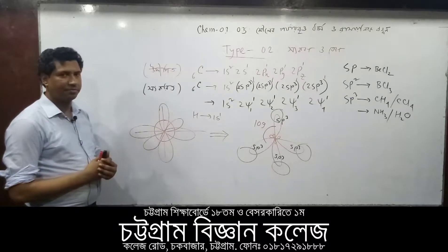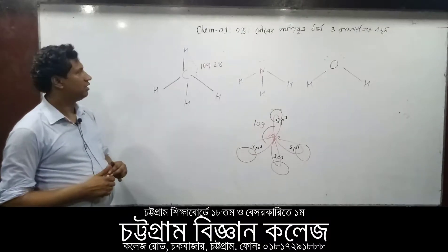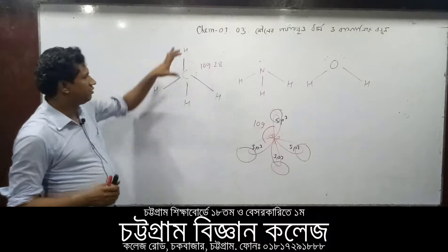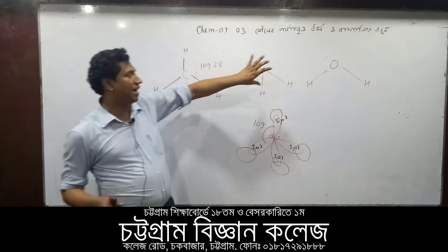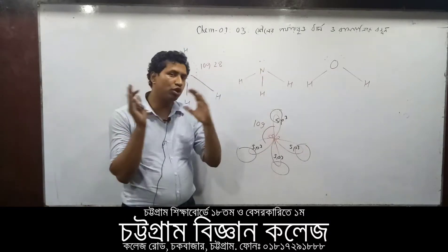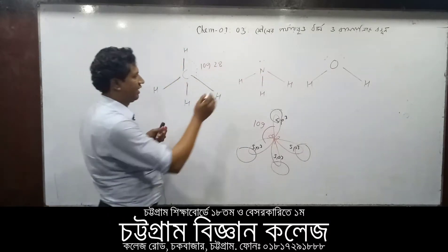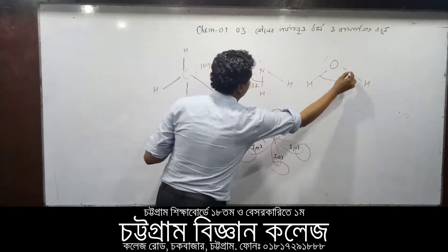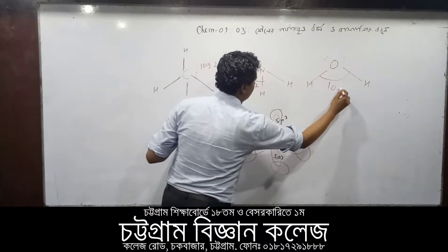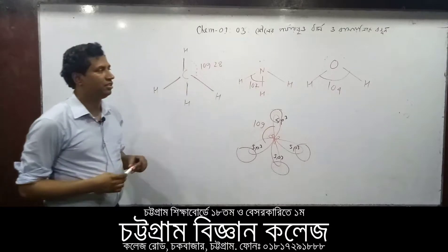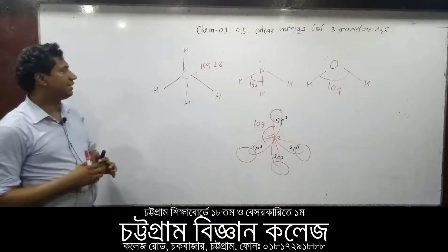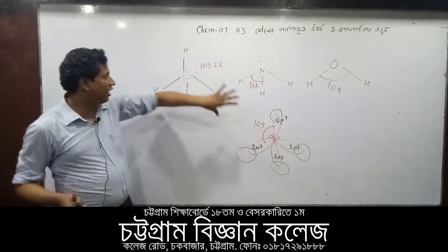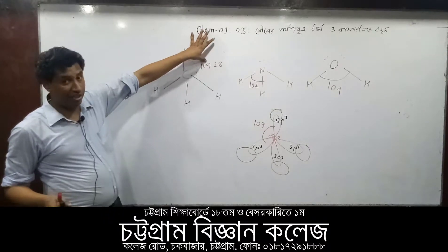We will learn the same thing. Let's learn how to do it. Methane, ammonia, and water — how can they be connected? For methane, it is connected to 109 degrees.